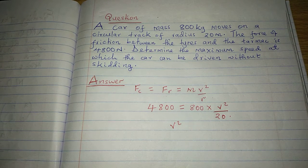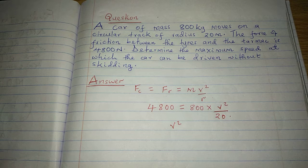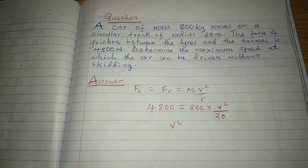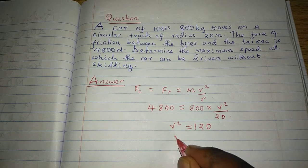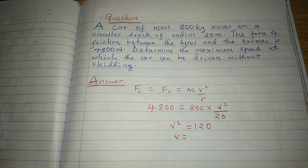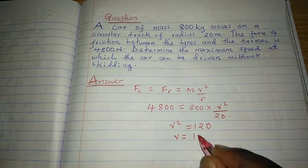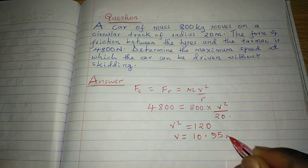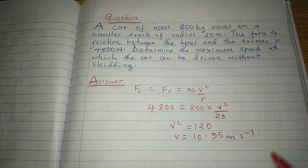V squared will be 4800 times 20 divided by 800. This gives us 120. So the velocity will be 10.95 meters per second.